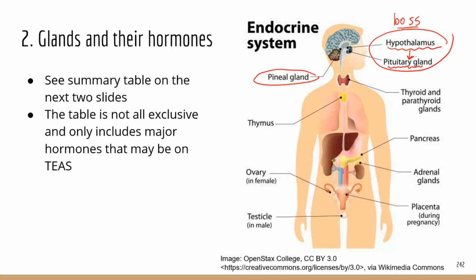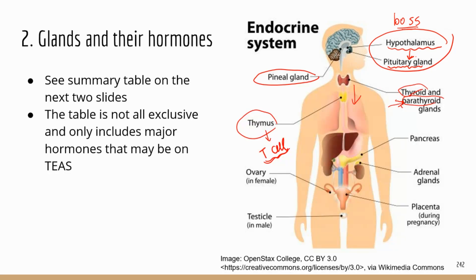Moving down to the neck area, you have the thyroid gland and the parathyroid gland. The parathyroid gland is called that because it's posterior to the thyroid gland — in terms of function, there's no association between the two. Moving further down, we have the thymus. You only need to know that thymus secretes hormones that stimulate the maturation of T-cells — we discussed how T-cells mature in the thymus in the immune system chapter.